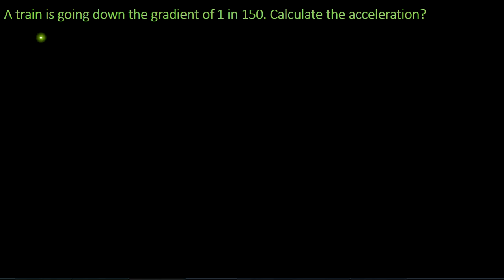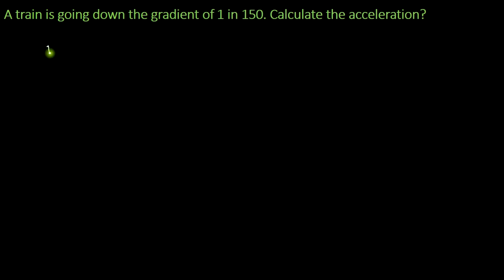Let us discuss problem number two. A train is going down the gradient of 1 in 150. Calculate the acceleration. We are not provided with any other information, which means we can consider that the train is moving only due to the action of gravity — it is not being excited by any electrical or fuel source. We know that tractive effort at the wheels equals force to accelerate the train, plus or minus force to overcome gravity, plus force to overcome resistive forces. Since there is no information about resistive forces, I will consider FR to be zero.